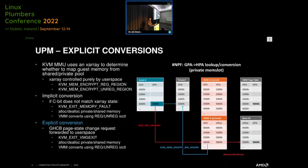For SMP we also have explicit conversions where the guest tells KVM in advance via a hypercall that it intends to use a particular page as private or shared — for example, telling the hypervisor that 3000H should be a private page. Currently with the SMP hypervisor patches that's all handled in the kernel. But with UPM, we forward that page state change out to the VMM in the form of a new KVM exit VMG exit. The VMM then does the same thing as in the implicit conversion case: ensures memory is allocated in the memFD backend, issues a KVM ioctl to flip the state in the X-array, and then you can satisfy the nested page fault.